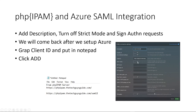We want to turn off Strict, and we want to turn off Sign Authentication Requests. Depending on your security requirements, you may want to reflect on what these mean, but for today we're just looking to get simple SAML authentication up. We'll grab this client ID and paste it into Notepad, then copy that and add it after the slash SAML 2. I'll show you later what that's for.